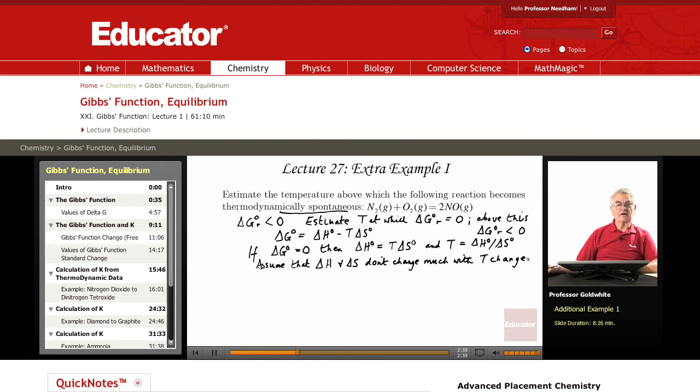So now we have to calculate the standard enthalpy change for this reaction and the standard entropy change for this reaction. Divide one by the other and that will give us the appropriate temperature. So let's do that. We will need data that we can get from our textbook or from a table of standard thermodynamic functions.